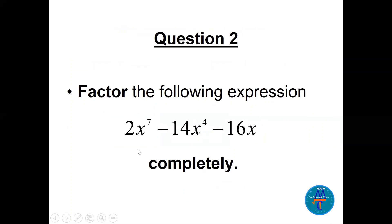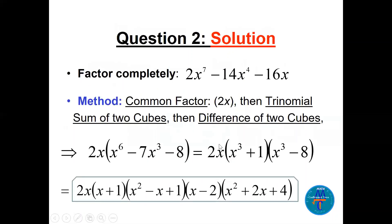Question 2: factor the expression completely. We always do the common factor first — here it's 2x. Inside we have x⁶ - 7x³ - 8, a trinomial that factors as (x³+1)(x³-8). The sum of two cubes gives (x+1)(x²-x+1), and the difference of two cubes gives (x-2)(x²+2x+4). Review the formulas!